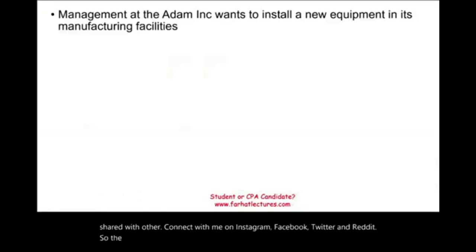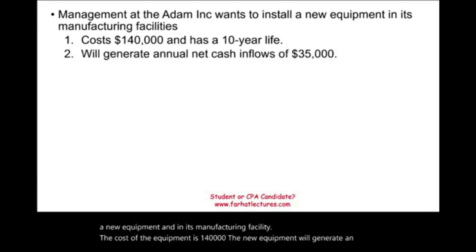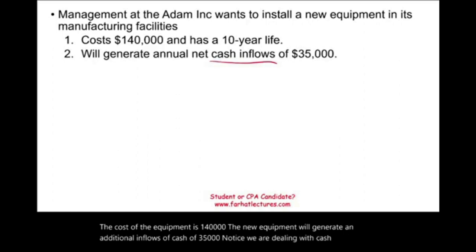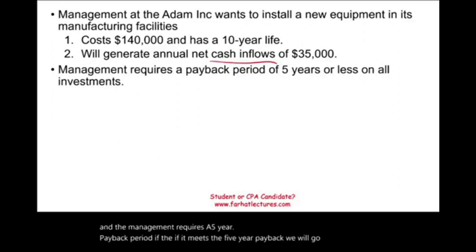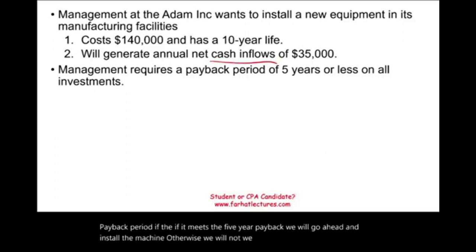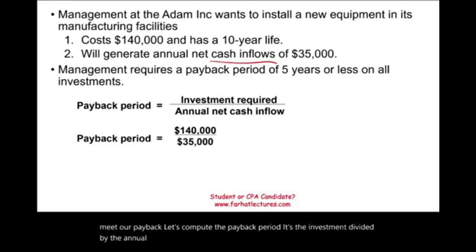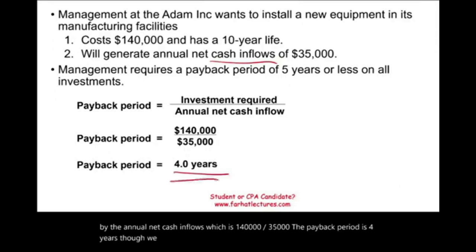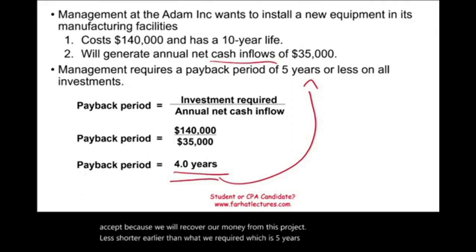The first example: management at Adam Company wants to install new equipment costing $140,000. The equipment will generate additional cash inflows of $35,000, and management requires a five-year payback period. The payback period equals investment divided by annual net cash inflows: $140,000 divided by $35,000 equals four years. We should accept because we recover our money in four years, which is shorter than the required five years. A shorter payback is better.